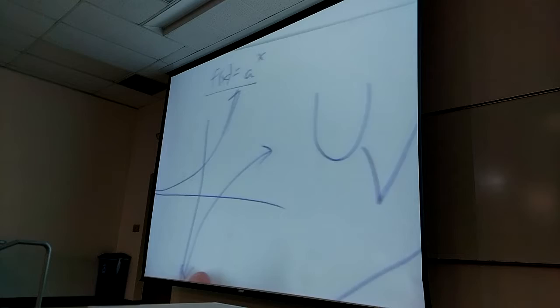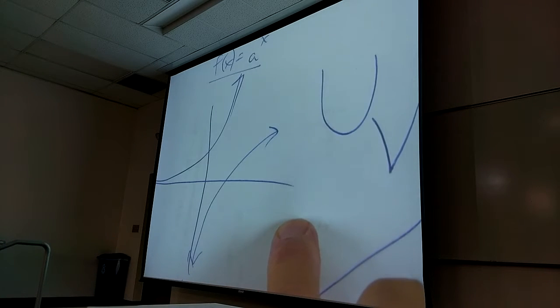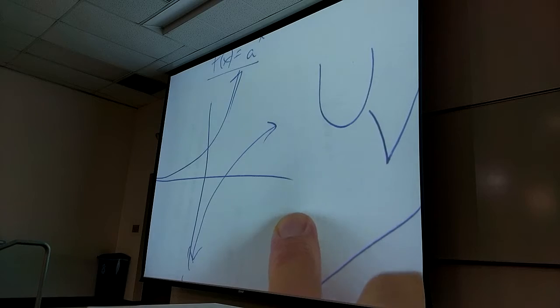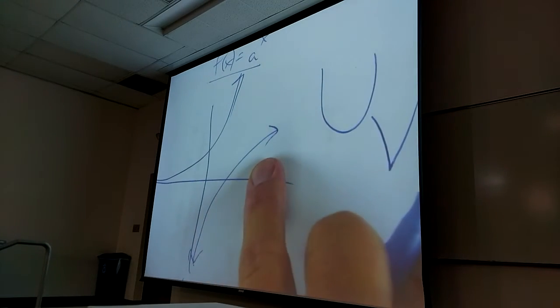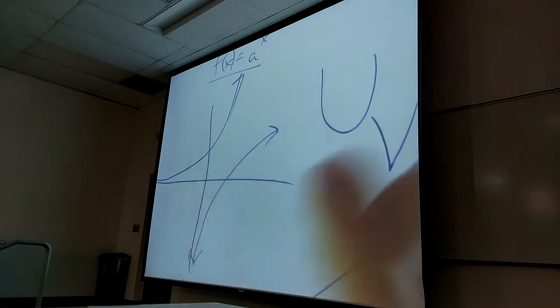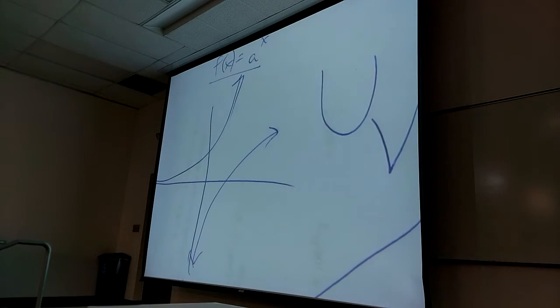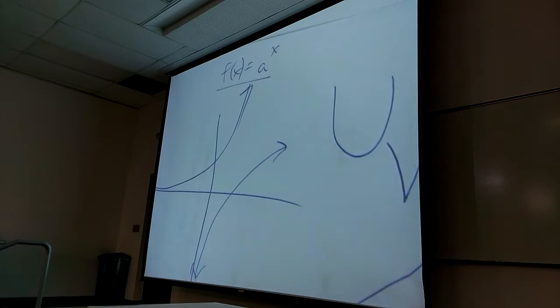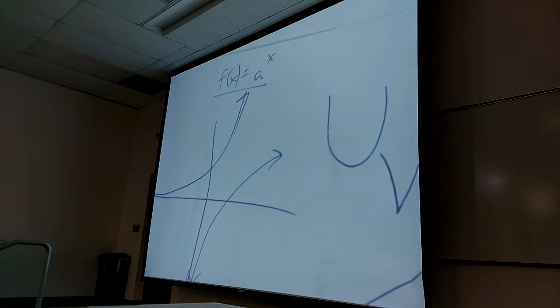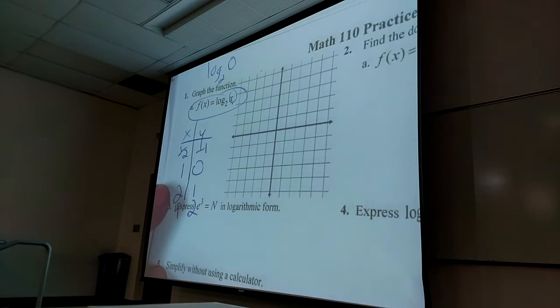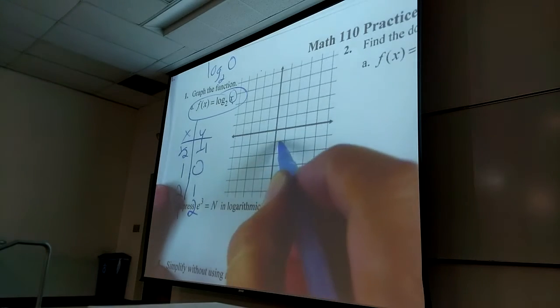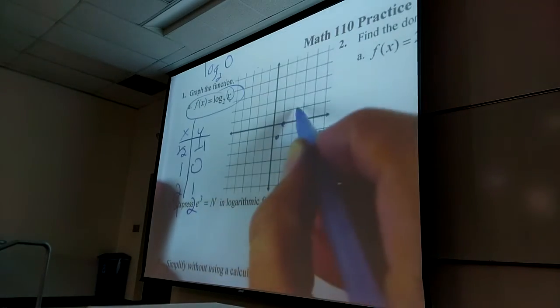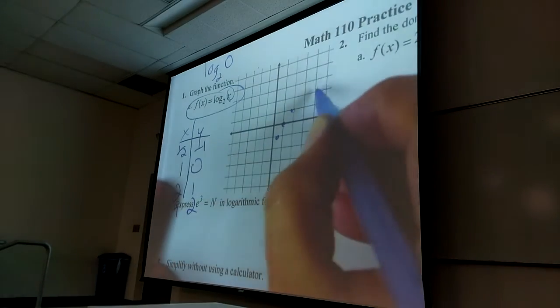You know the general shape of a logarithm. This is the general shape of a log. If I ask you to graph a log and your shape doesn't look anything like this, you're wrong. You've got to know the basic shapes of functions. So if you just plot those points — one half, negative one; one, zero; two, one; four, two — you can put the shape in on top of it. There's your shape.